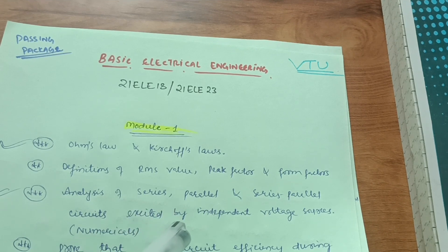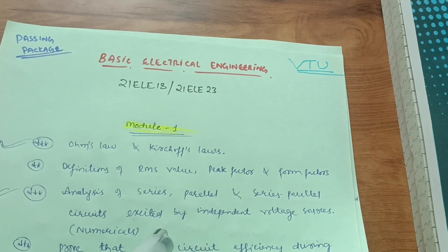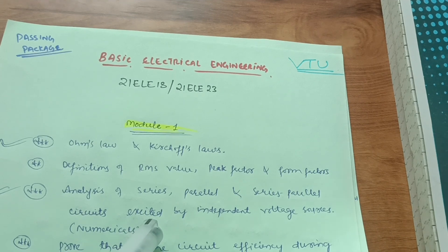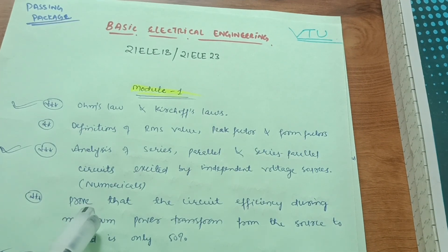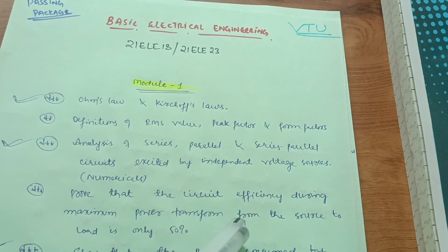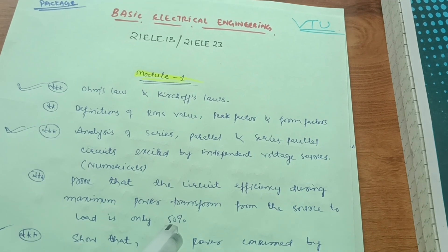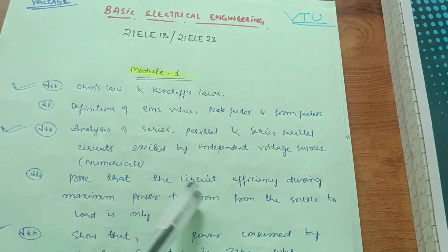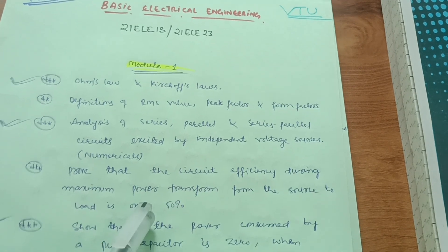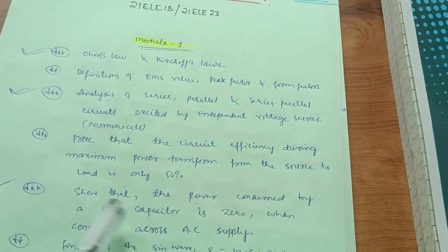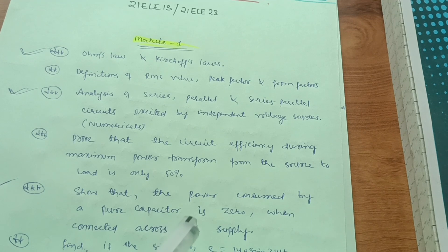In Module 1, go through the analysis of series and parallel circuits. Another important question is: Prove that the circuit efficiency during maximum power transfer from source to load is only 50%. The syllabus is vast in this subject, so I have selected the most super important questions. This is a key question — that circuit efficiency during maximum power transfer from source to load is only 50%.